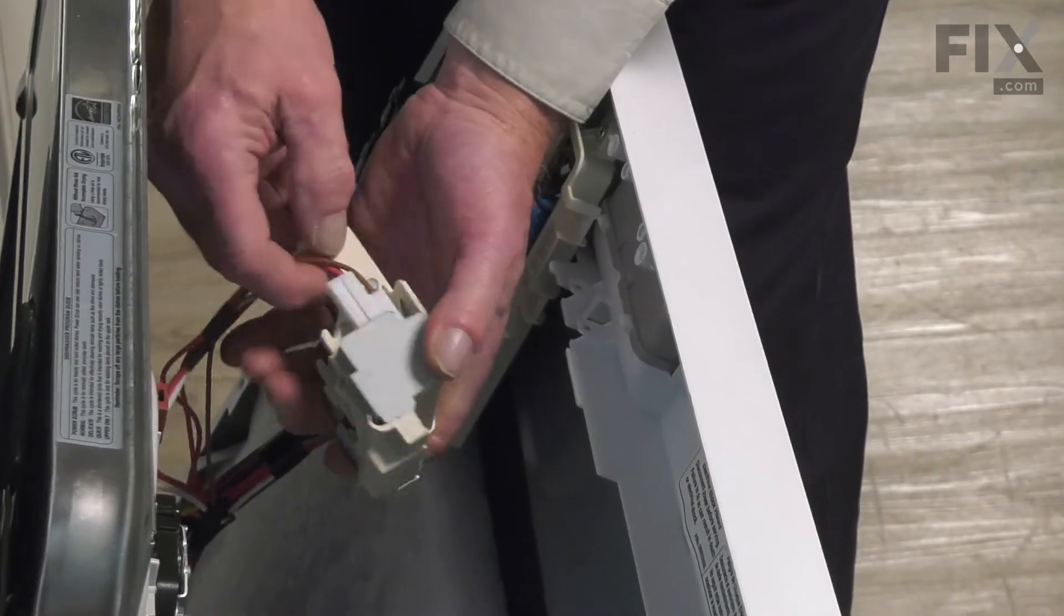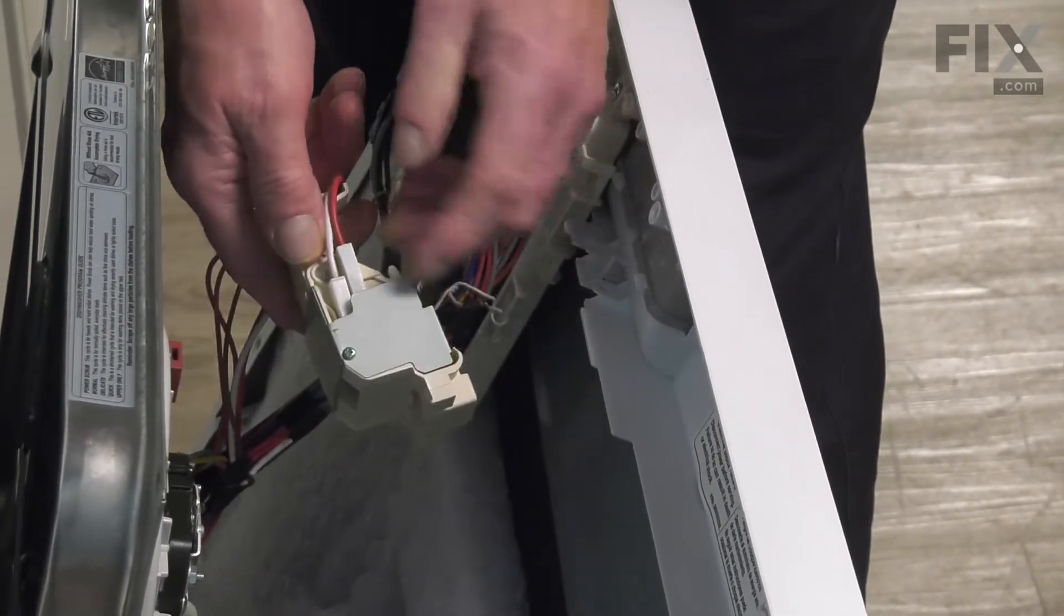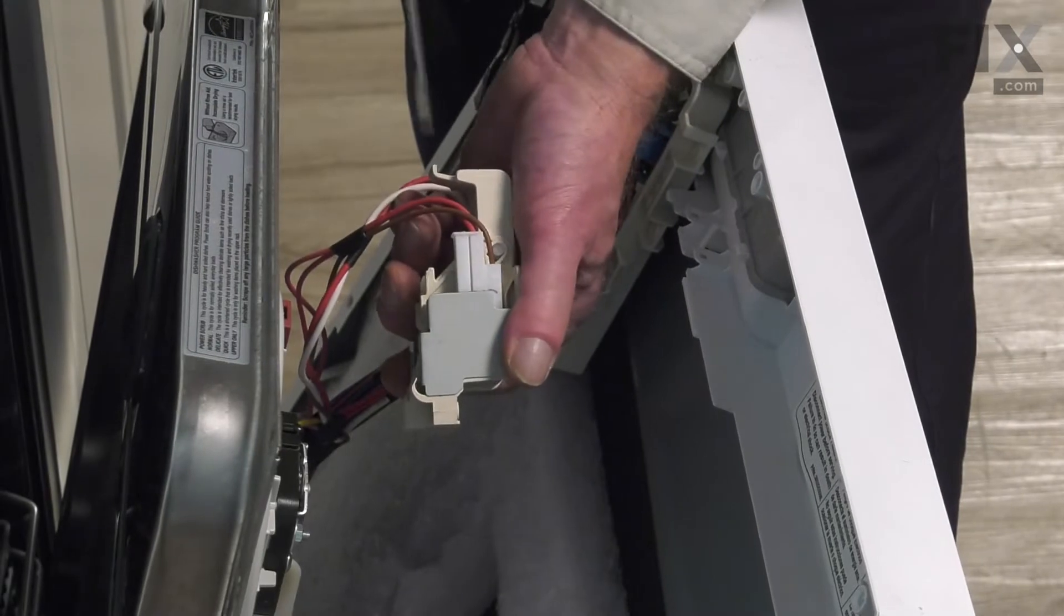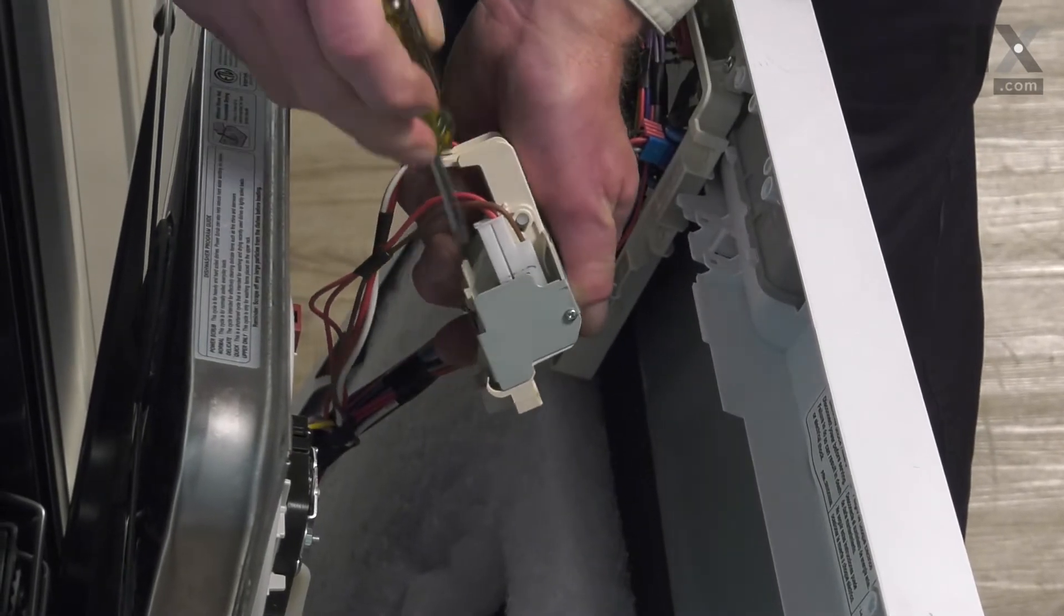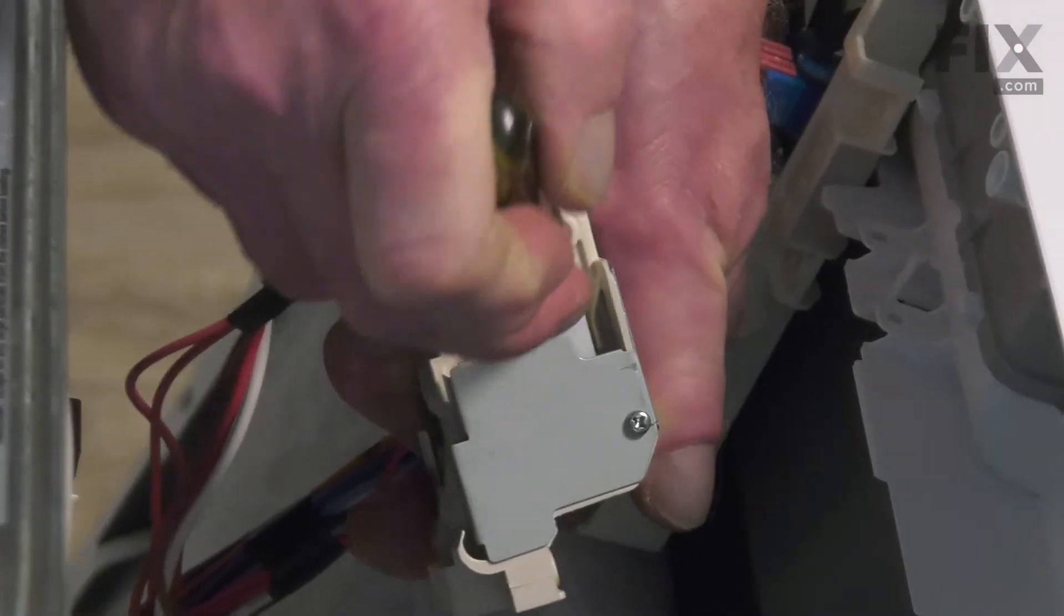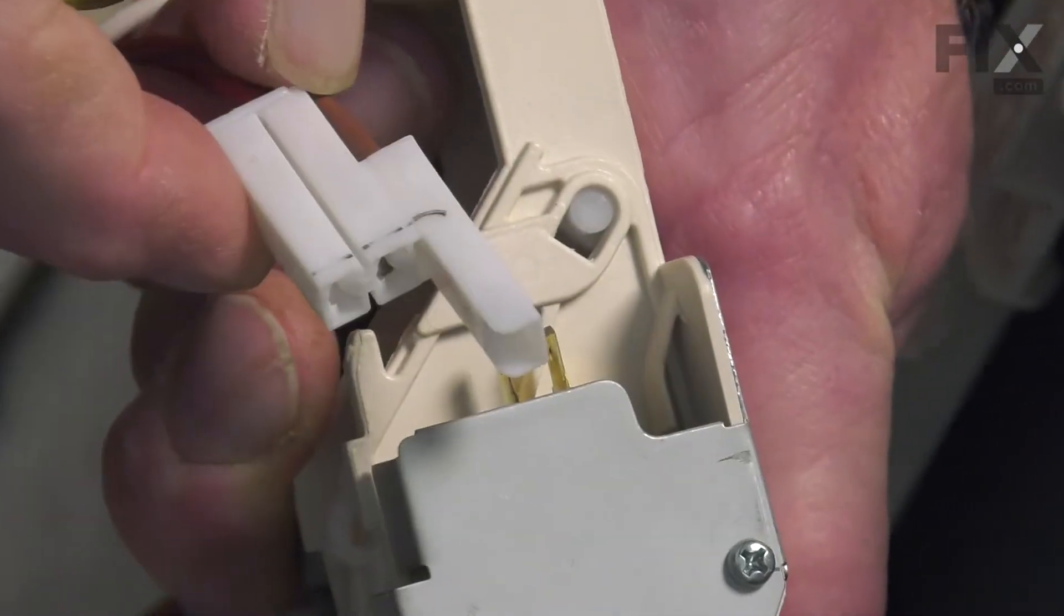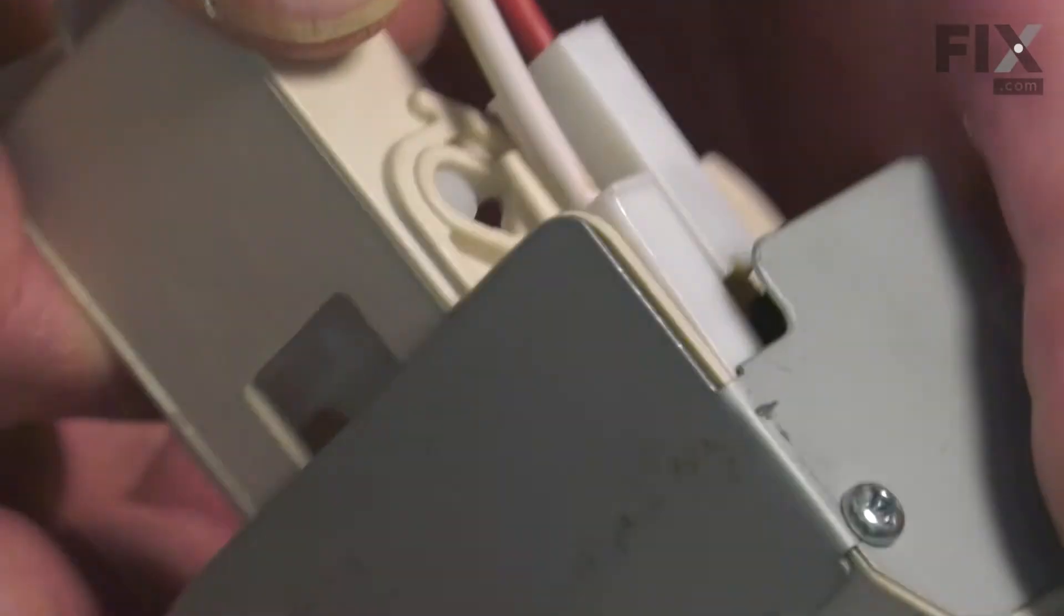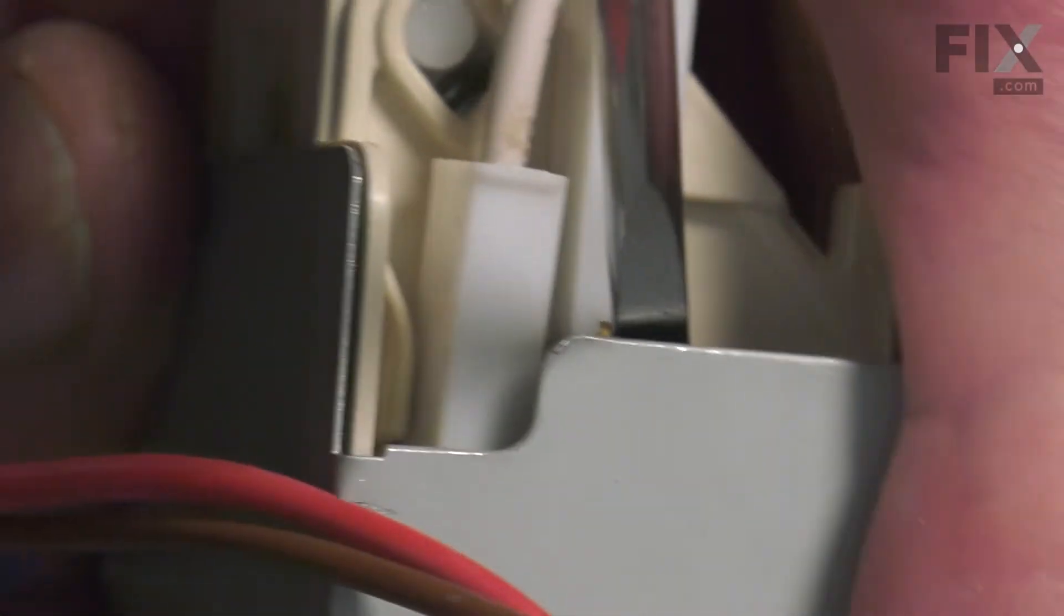We next need to remove the wire harnesses from the old door latch. It's probably best to use a flat blade screwdriver. You just go in and pry those connectors away from the switches. Take note of where each of these wires are attached.